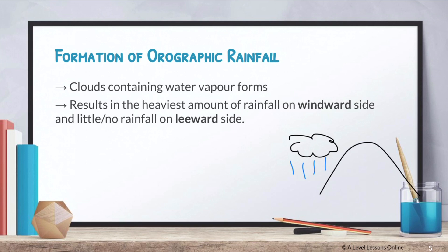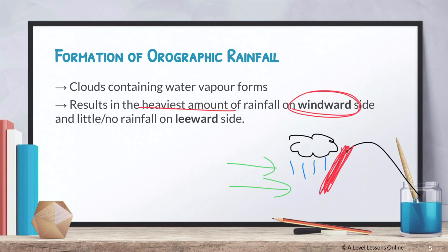These are not cumulonimbus clouds - take note of that. The result is the heaviest amount of rainfall on the windward side, because this is where the trade winds are blowing in from.